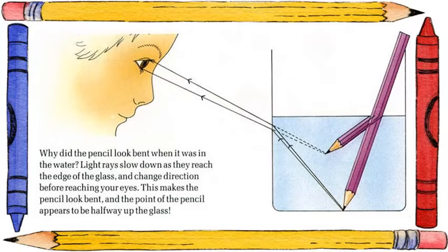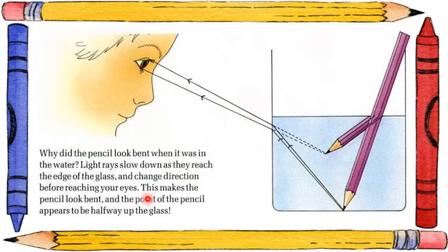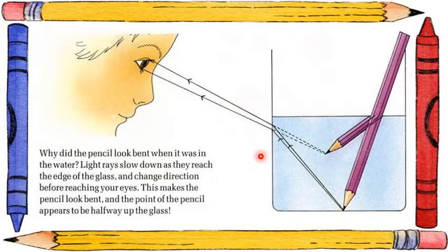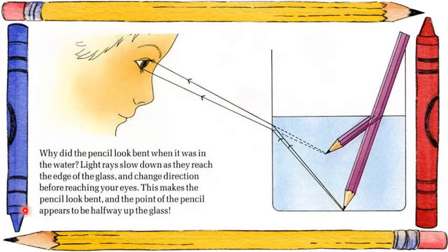Here is one more example: a glass of water with a pencil. Why did the pencil bend when it was in the water? Light rays slow down as they reach the edge of the glass and change direction before reaching your eyes. This makes the pencil look bent and the point of the pencil appears to be halfway up the glass. Even though the pencil is straight, it looks like a bent structure.